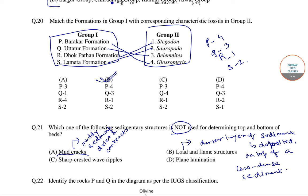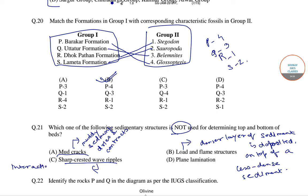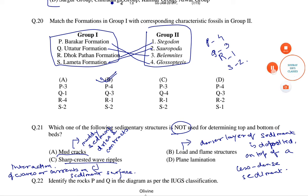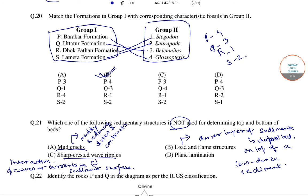Sharp crested wave ripples are formed as a result of the interaction of waves or currents on a sediment surface. Plain lamination is a small-scale sequence of fine layers that occur in sedimentary rocks.